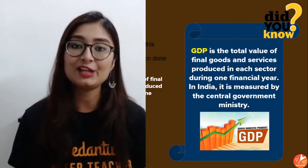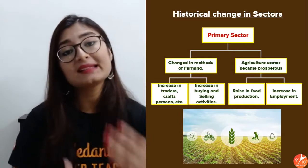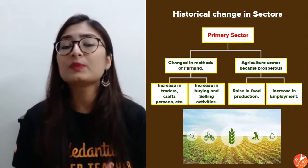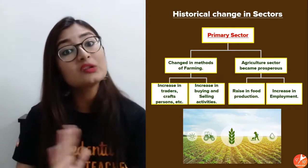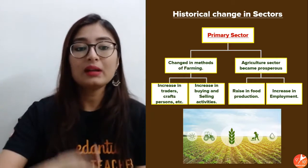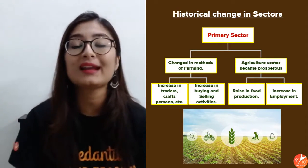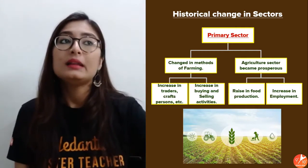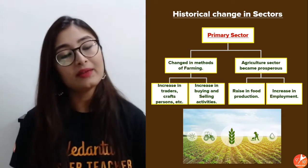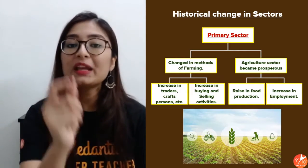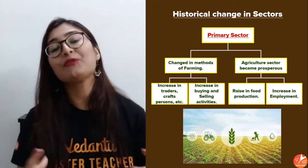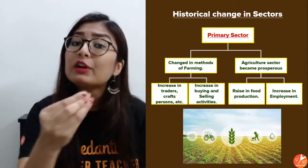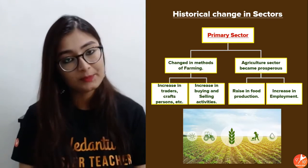Now let's talk about the changes that have happened in these sectors over time. We've understood what they are, how goods are produced, and how they're interdependent. Now we'll understand how their journey has been — how these different sectors have looked over time. Primary, secondary, and tertiary sectors didn't look the same 10 or 20 years back. Let's begin with the primary sector.